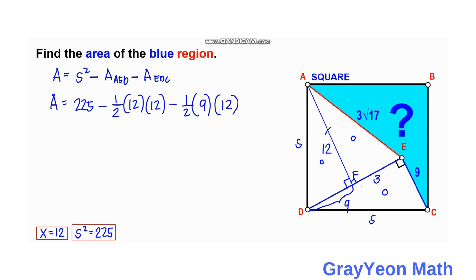Simply this becomes a 6, and this becomes a 6. So this becomes, we copy this, and we have 225 minus 72, and this minus 9 times 6 is 54. So this gives us the area of the shaded region.